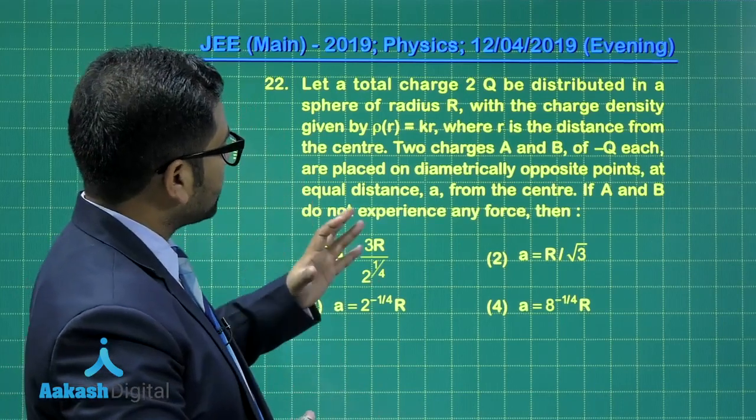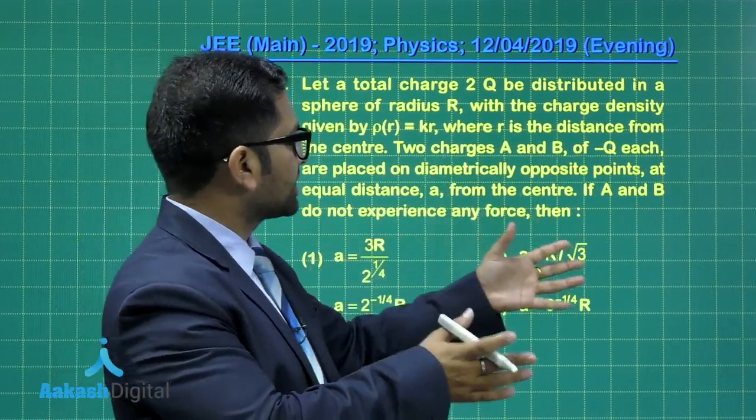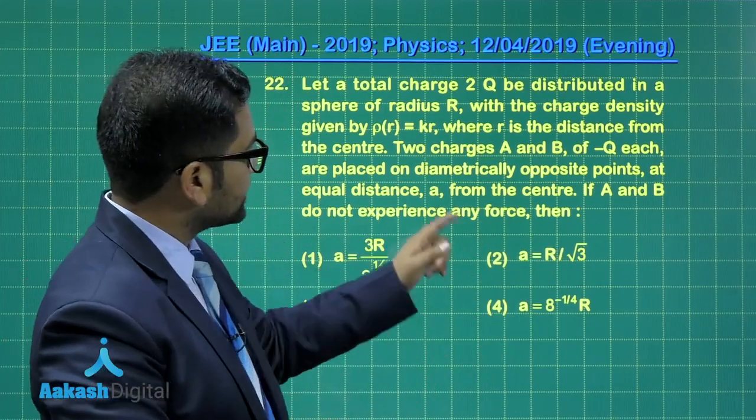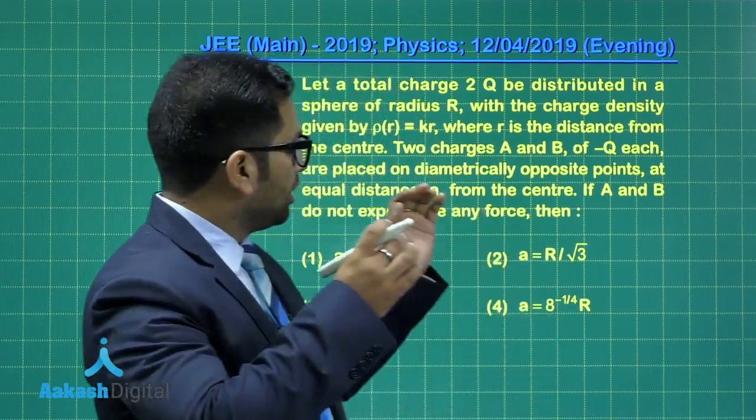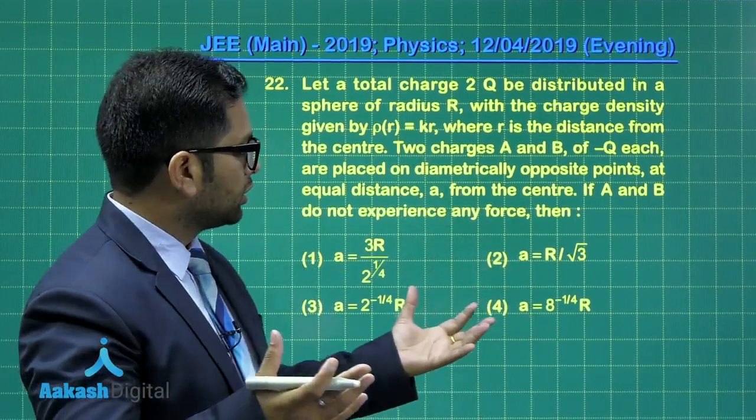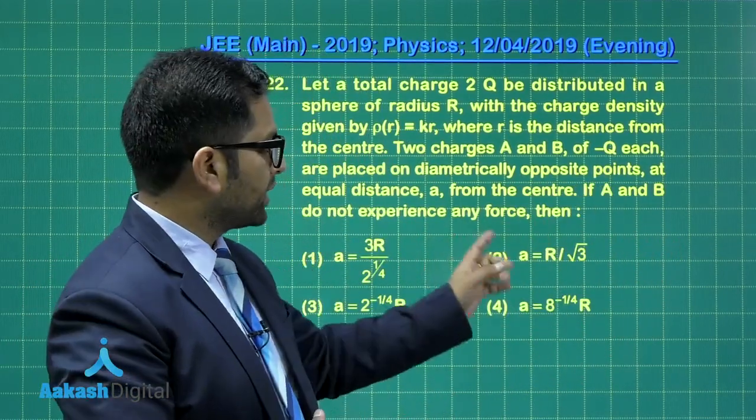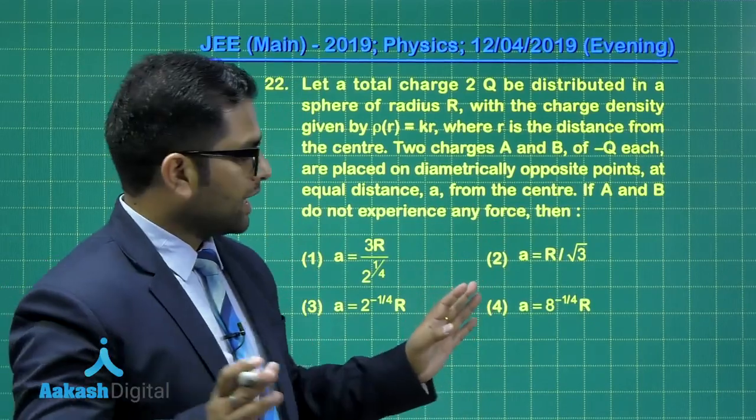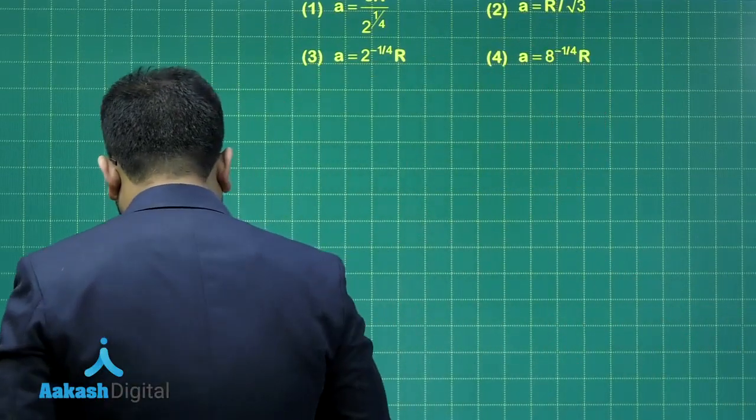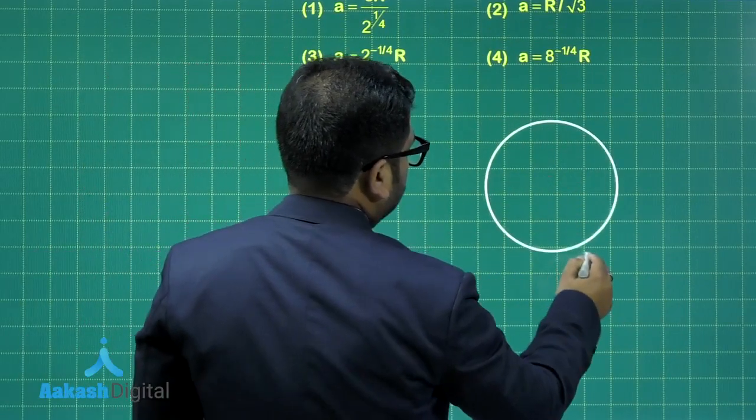And after that, there are two charges. The next episode of the story, and those charges are minus q each, are placed diametrically opposite at a distance a from the center. And if A and B, the charges minus q, experience no force, we need to relate that distance a where the charge minus q is placed with the radius. It's a nice one. Now let's try to see. For that, I will take the help of a figure. Let me make a sphere, just a schematic one.